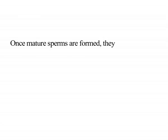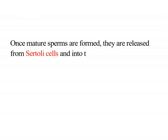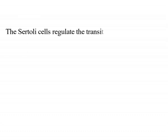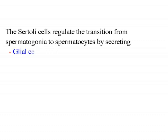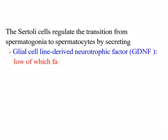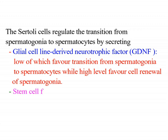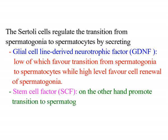Once mature sperms are formed, they are released from the Sertoli cells into the lumen of seminiferous tubules through a process called spermiation. Sertoli cells regulate the transition from spermatogonia to spermatocytes by secreting two factors: glial cell line-derived neurotrophic factor (GDNF), where low concentration favors transition from spermatogonia to spermatocytes while high levels favor cell renewal of spermatogonia; and stem cell factor, which promotes transition to spermatogenesis.